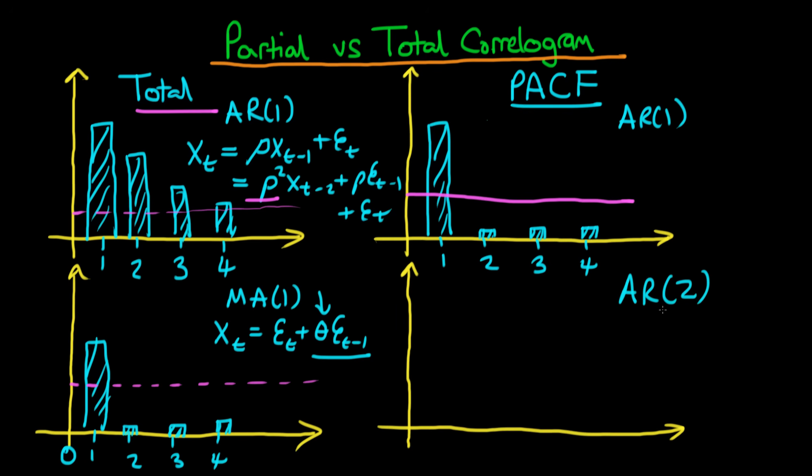An AR2 process on the other hand, remember an AR2 process is XT is equal to rho 1 times XT minus 1 plus rho 2 times XT minus 2 plus some error ET. Whereas in contrast an AR1 process will just be XT is equal to rho times XT minus 1 plus some error. So even after I've taken away the effect of XT minus 1, there will still be some residual correlation between XT and itself and that's going to be given by this rho 2.